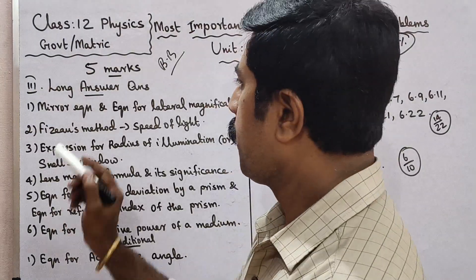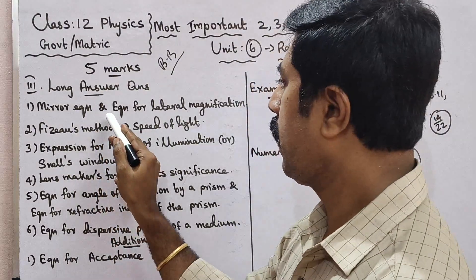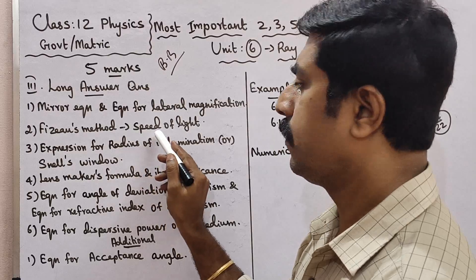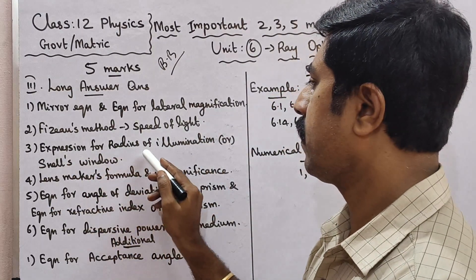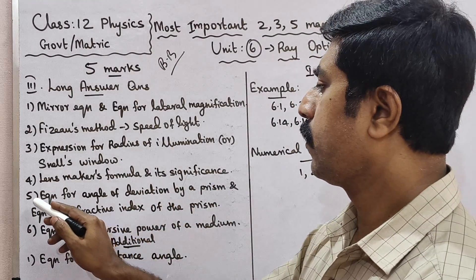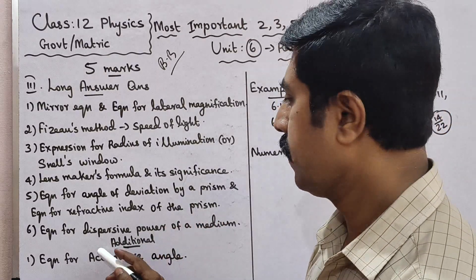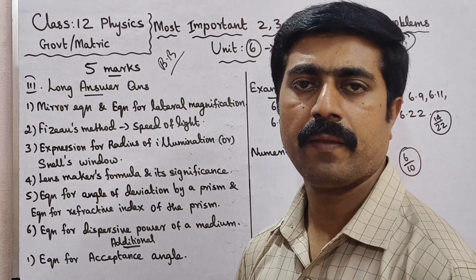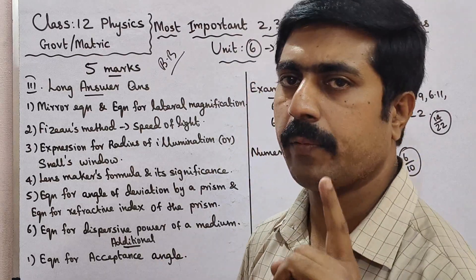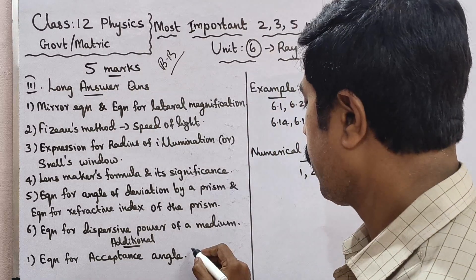For 5-mark long answer questions: Question number 1 — Obtain the mirror equation and equation for lateral magnification of a spherical mirror. Question number 2 — Fizeau's method to determine the speed of light. Question number 3 — Expression for radius of illumination or Snell's Window. Question number 4 — Lens Maker's formula and its significance. Question number 5 — Equation for angle of deviation by a prism and equation for refractive index of the prism. Question number 6 — Equation for dispersive power of a medium.